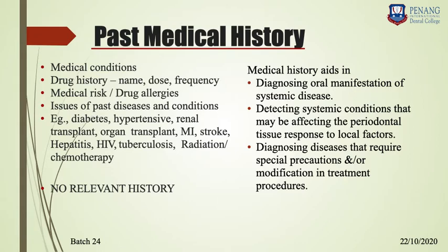Past medical history is important because some medical diseases may play a role in inducing periodontal disease, or in affecting periodontal tissue by modifying the response to local factors, or may require modification in your periodontal treatment. Medical history helps in diagnosing oral manifestations of systemic disease, determining conditions that may affect periodontal tissue response, or identifying diseases that require special precautions in treatment procedures.